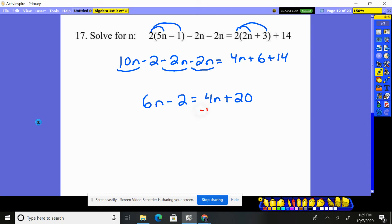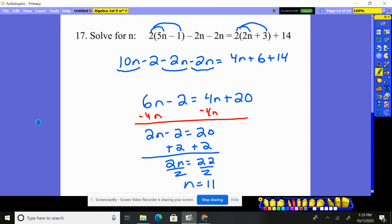I'm now going to go ahead and get all my variables on one side, so I subtract 4n. That would be 2n, take away 2, equals 20. Move my number over. 2n is 22, divide by 2, divide by 2, n is 11.